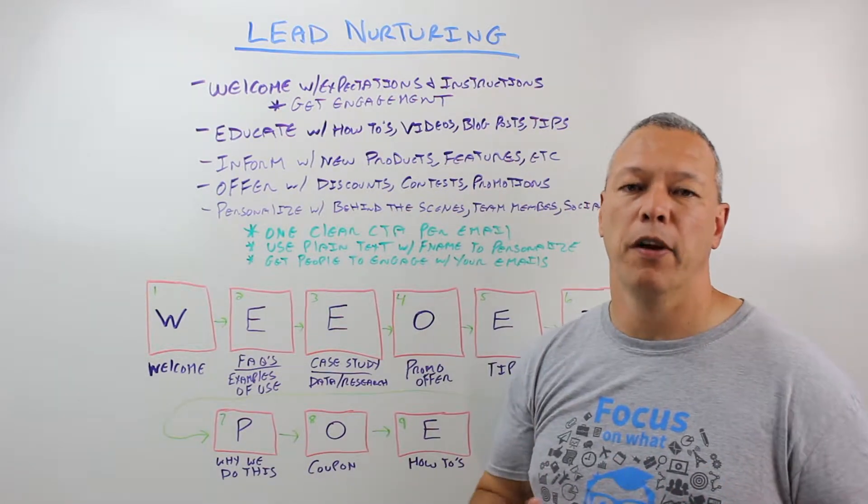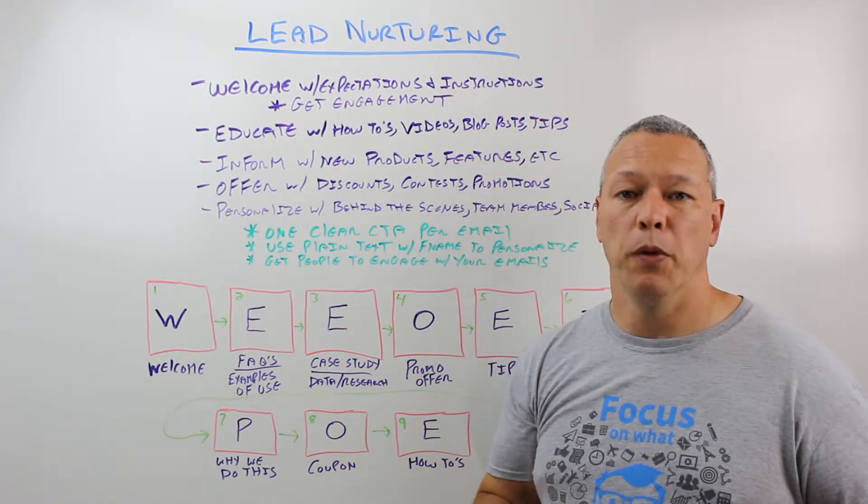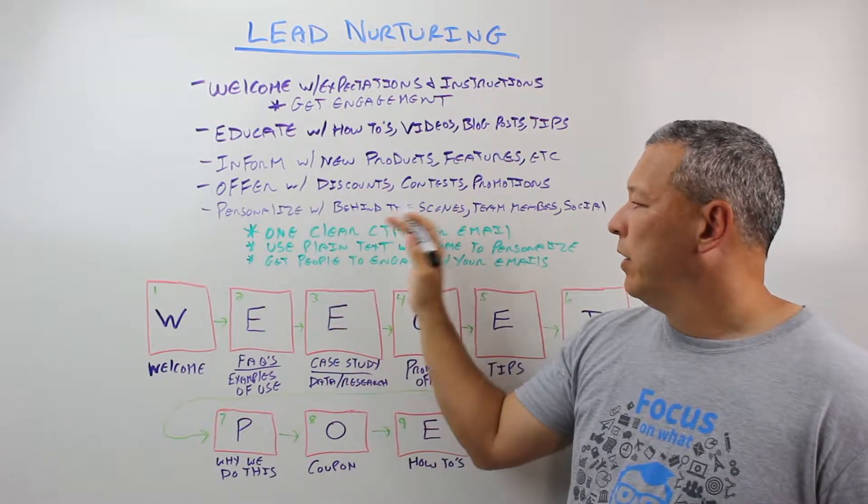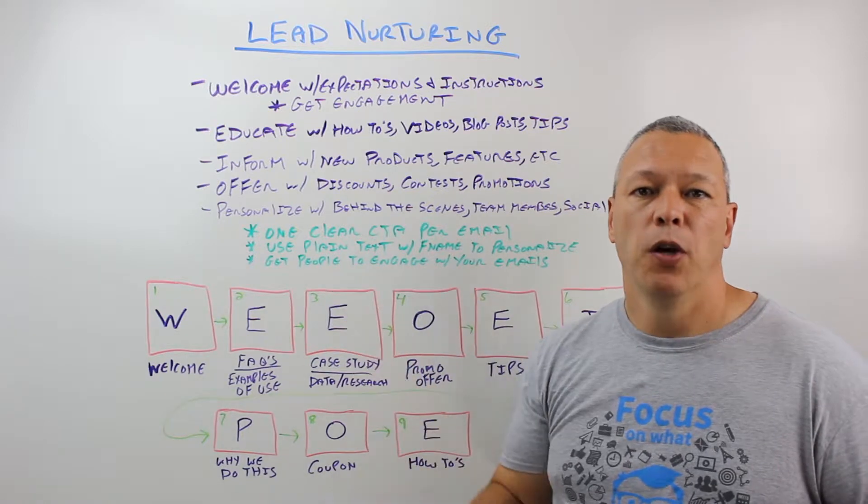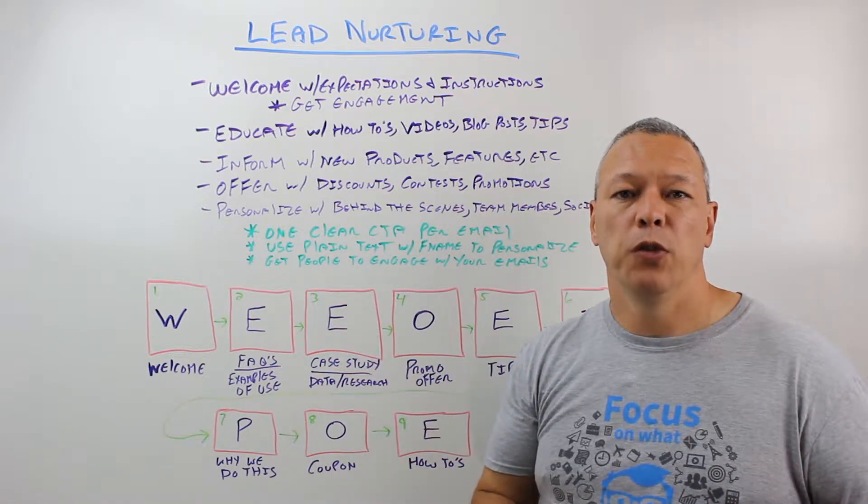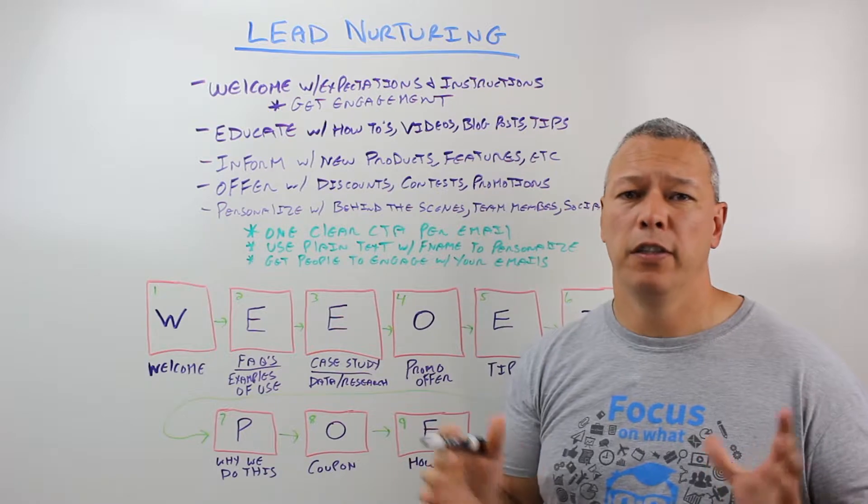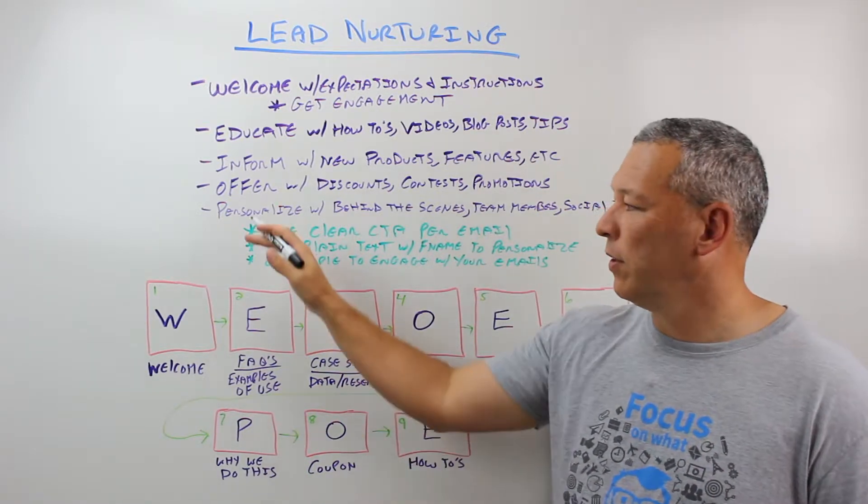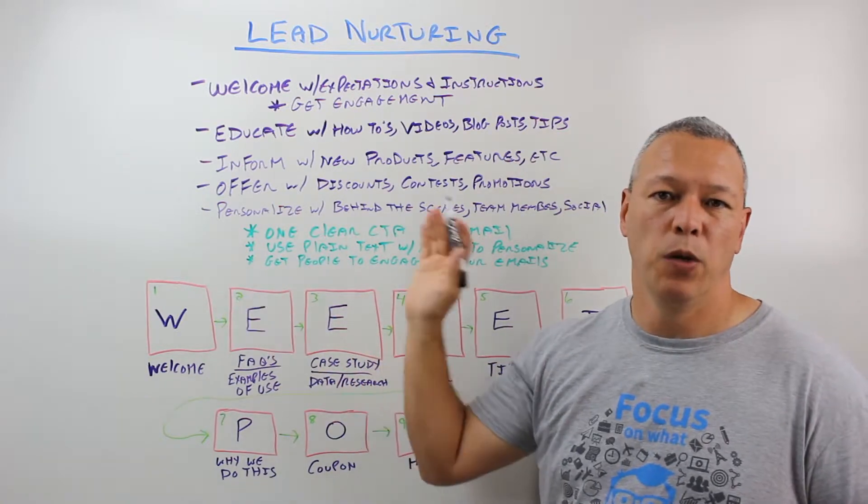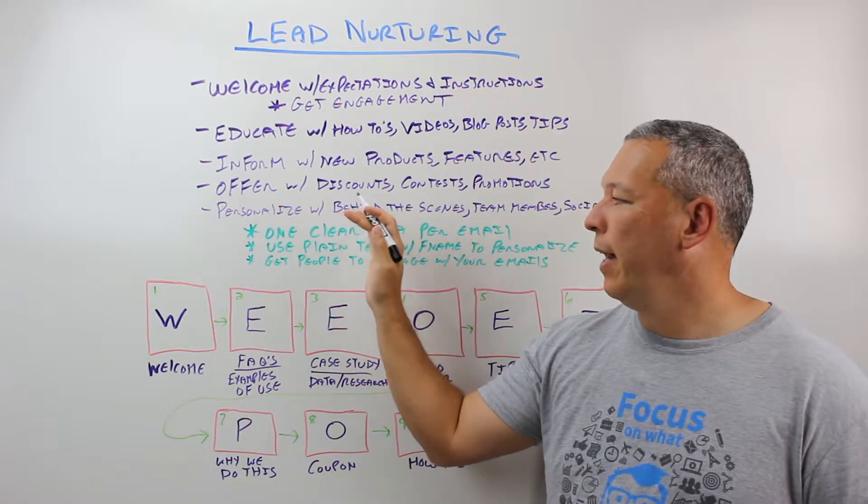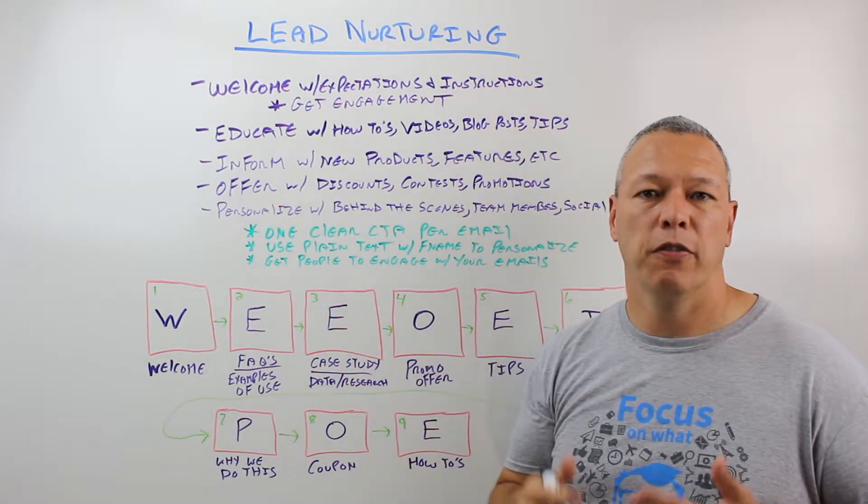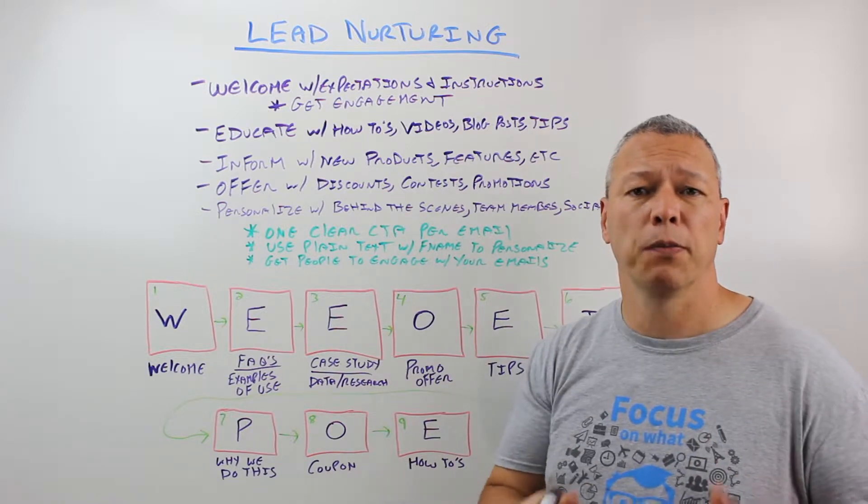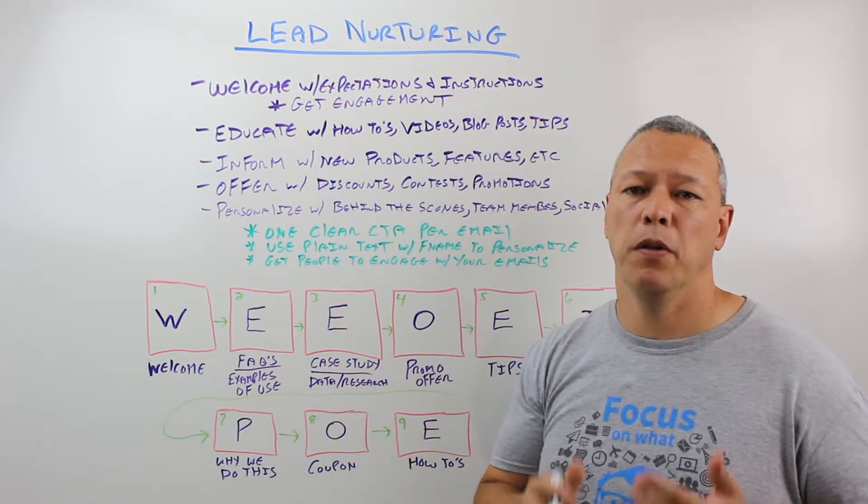Okay, a couple tips. One clear CTA, call to action, per email. So you don't want to do a traditional newsletter type send where you have a dozen different things you're talking about. They don't work. People don't have time to read those anymore. You want to send nice clear messaging, one topic, two topics tops, and one clear call to action for them to click on, whether that's read the blog post, get a coupon, check out this new service, something like that. Make it very simple, very clear.